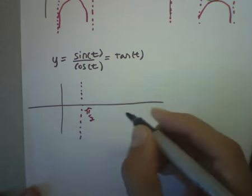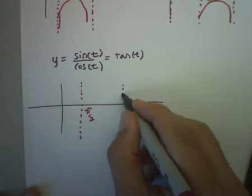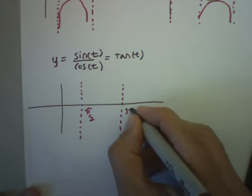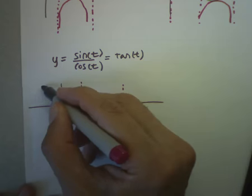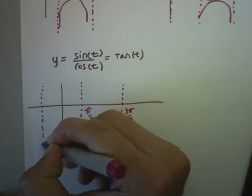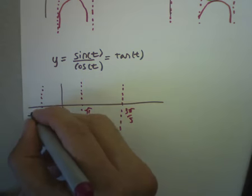And 5π/2 and negative π/2, every odd multiple of π/2.